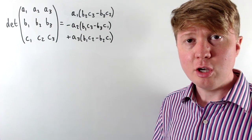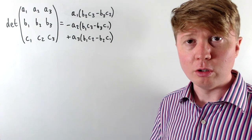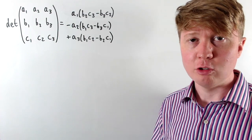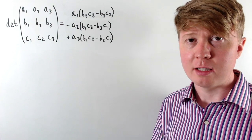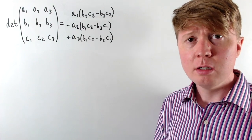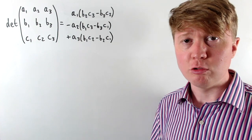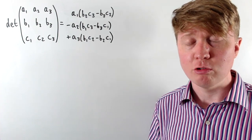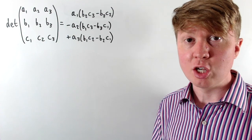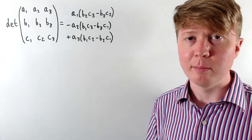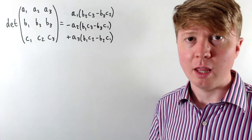We're going to look at the property of how the determinant of a matrix changes, or doesn't change, under certain elementary row and column operations, and try to really understand why this is the case. It can be really helpful to apply these operations to simplify a matrix if you're going to calculate the determinant by hand, particularly for a big matrix like a 3x3, 4x4, or larger.